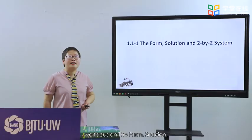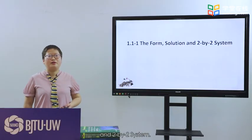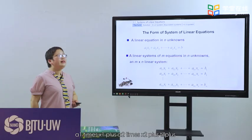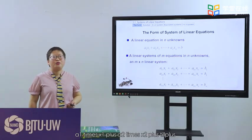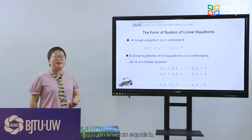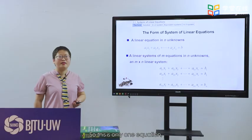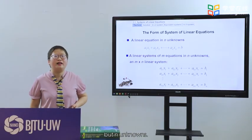In the first part, we focus on the form, solution, and the 2×2 system. We consider a linear equation in n unknowns. The equation is: a1·x1 + a2·x2 + ... + an·xn = b. Here, a1, a2 through an are given fixed values, and x1, x2 through xn are unknown variables. This is one equation with n unknowns.